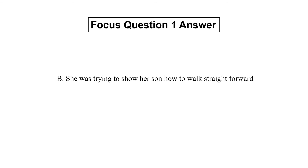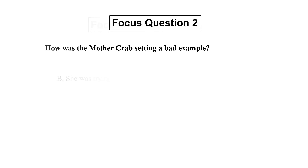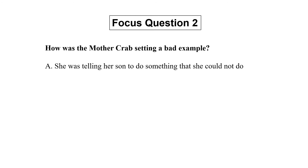Focus question 1: If you chose B, you are correct. Focus question 2: How was the mother crab setting a bad example? A. She was telling her son to do something she could not do. B. She was holding an umbrella. C. She fell.